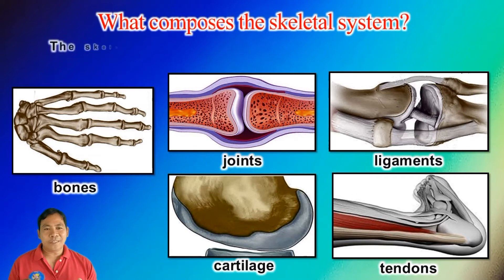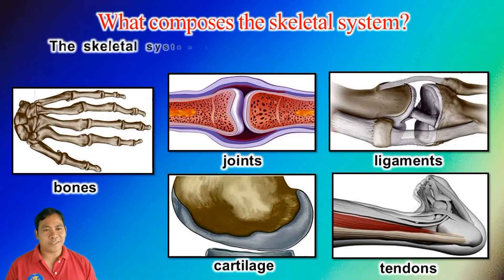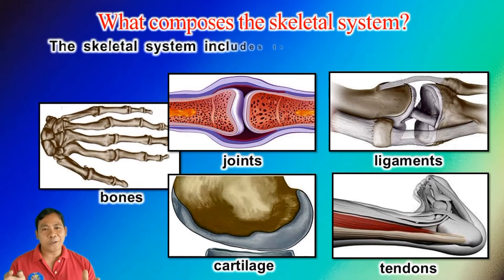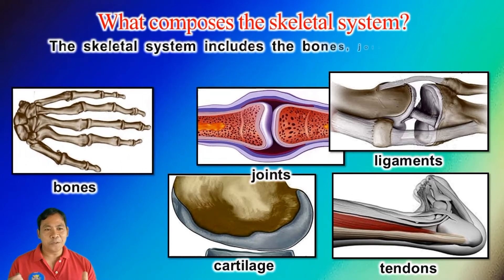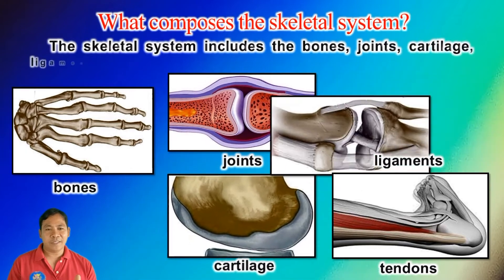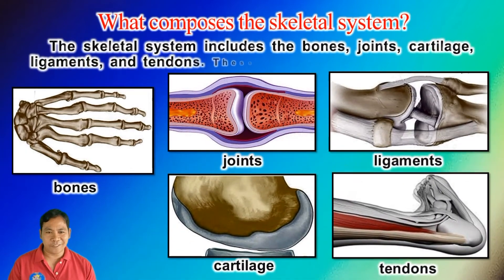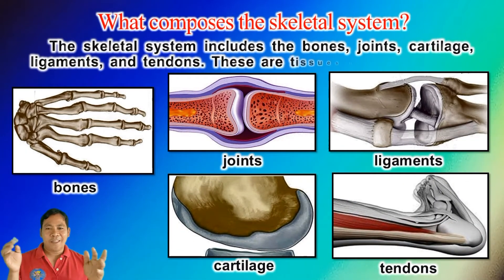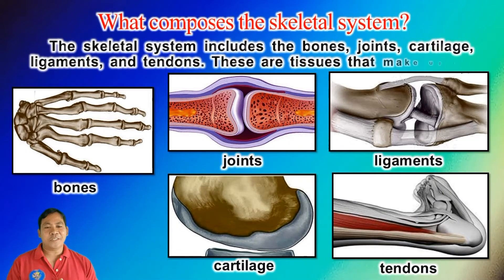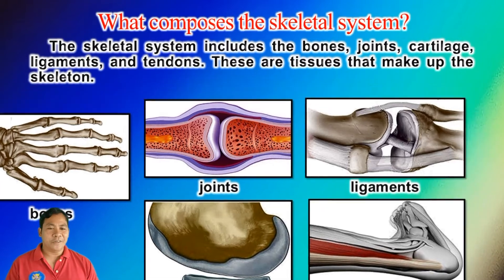The skeletal system includes the bones, joints, cartilage, ligaments, and muscles. These are the tissues that make up the skeletal system.